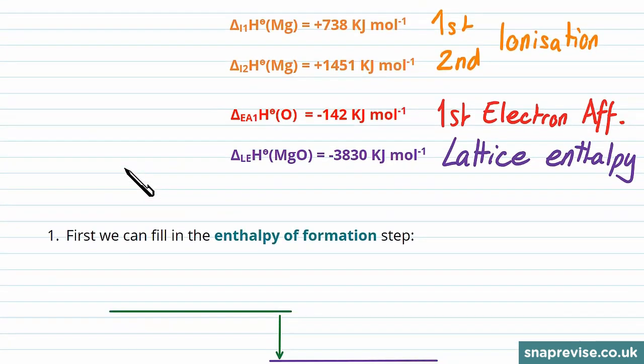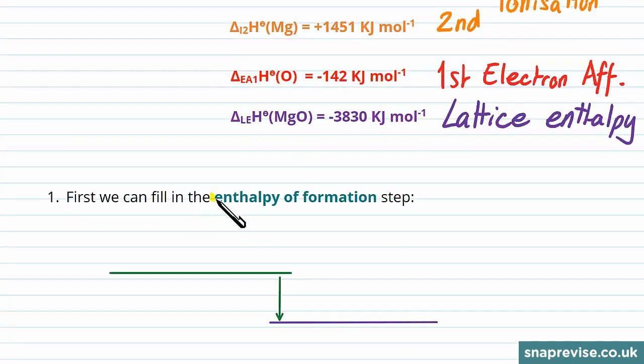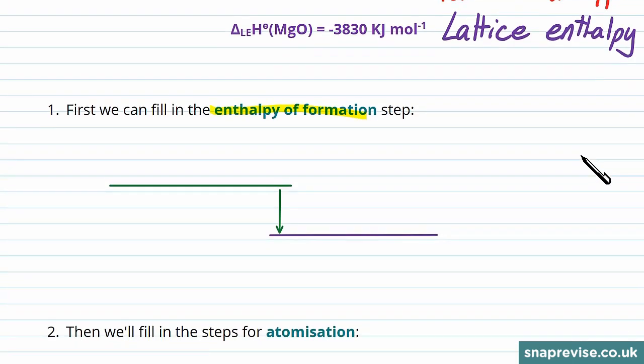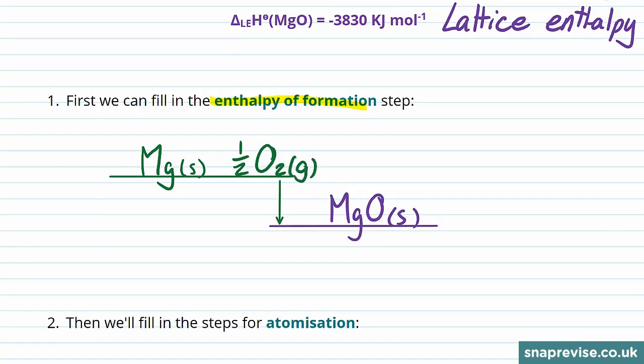We're going to start with the enthalpy of formation step, so we can write in our lattice magnesium oxide, and the elements that's made out of, which is solid magnesium in the form of a metal, and then half a mole of O2 gas, which is diatomic. The energy change in this case is a decrease in the energy of the system, so minus 602 kilojoules per mole.